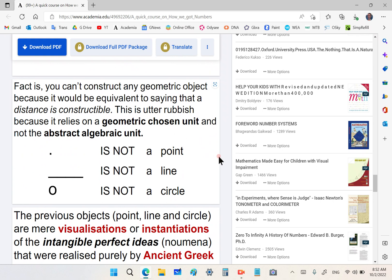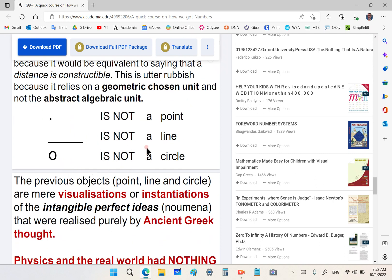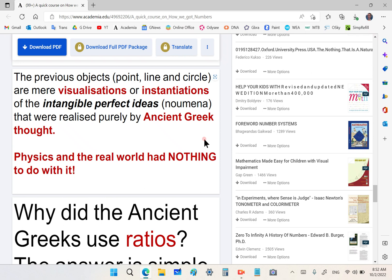The fact is, you cannot construct any geometric object because it would be equivalent to saying that a distance is constructible. This is utter rubbish because it relies on a geometric chosen unit. In other words, you first have to choose a standard length, and it does not rely on the abstract algebraic unit. These objects that I'm pointing to are not the actual mathematical objects.